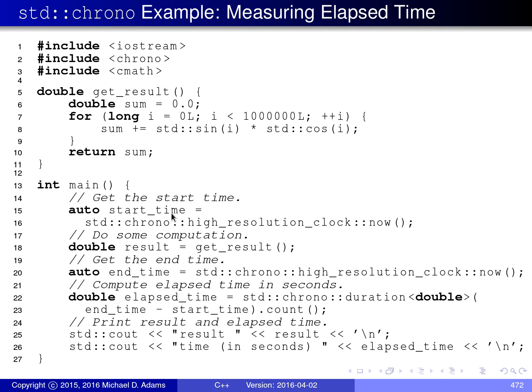Then we invoke the get_result function. And then after it returns, we again invoke the now member function for the high_resolution_clock, which again returns a time_point, which corresponds to the current point in time with respect to the high_resolution_clock. And we save this into end_time.